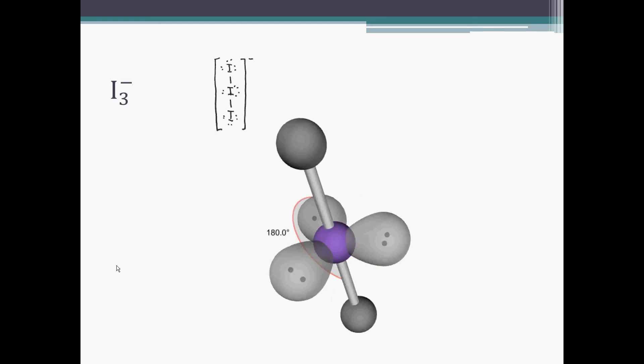If we go to the triiodide ion, I3-, we get three non-bonding pairs in the plane, and the iodines actually form a linear shape again.